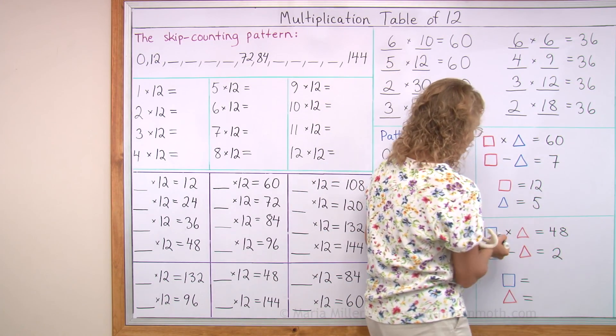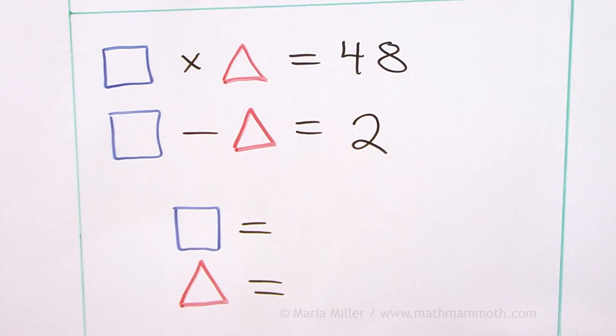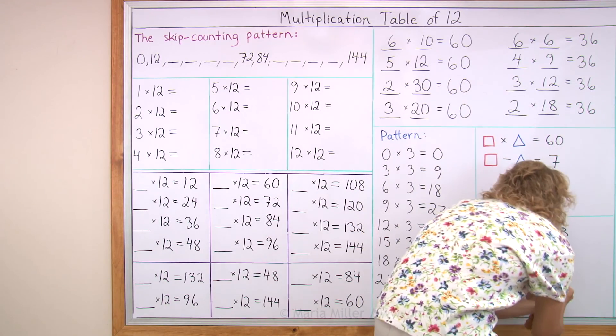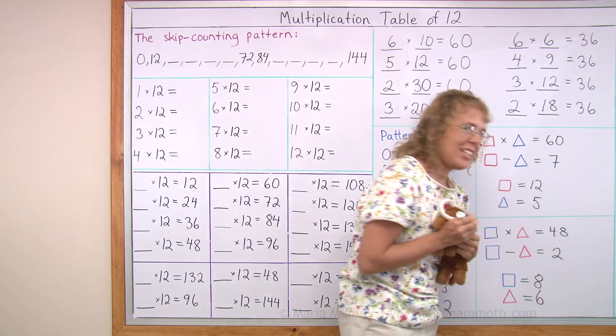Two numbers. You multiply them and get forty-eight. But if you subtract them, you get two. Can you tell me? Guess and check will work. As usual, Mathie will write the answer. And then you can check. Did you get eight and six?